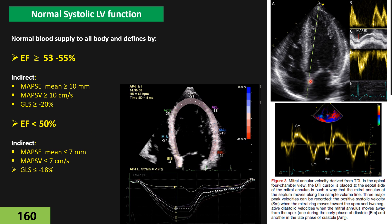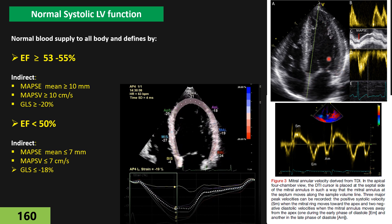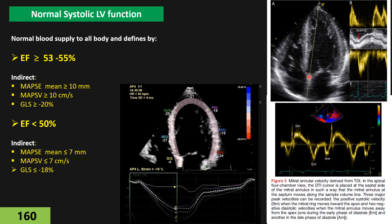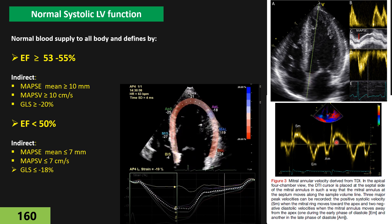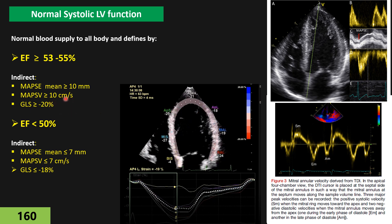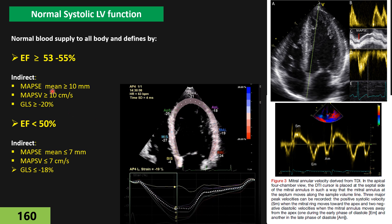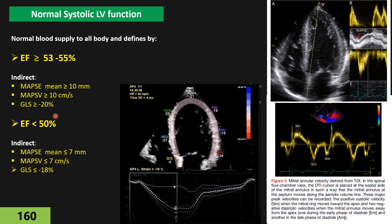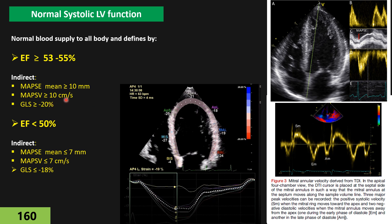For MAPSE, we do M-mode on the apical four-chamber view on the medial and lateral annulus and measure the mean of both. If the mean MAPSE is equal to or more than 10 mm, or MAPSV by tissue Doppler S-prime at the medial annulus is equal to or more than 10 cm/s, or global longitudinal strain by speckle tracking is equal to or more than minus 20% (typically around minus 22%), then if we have those criteria, ejection fraction will almost always be normal.